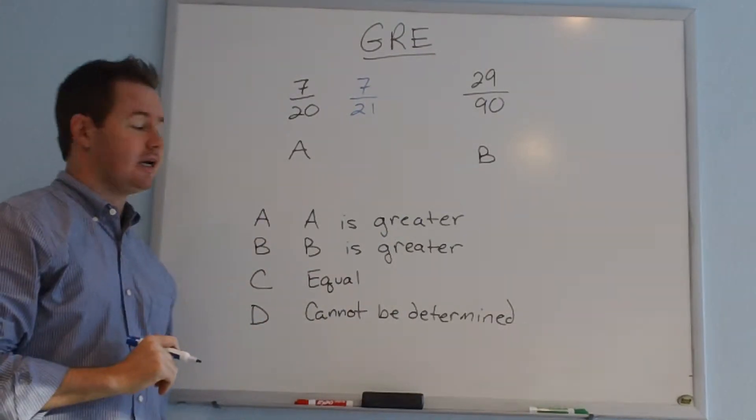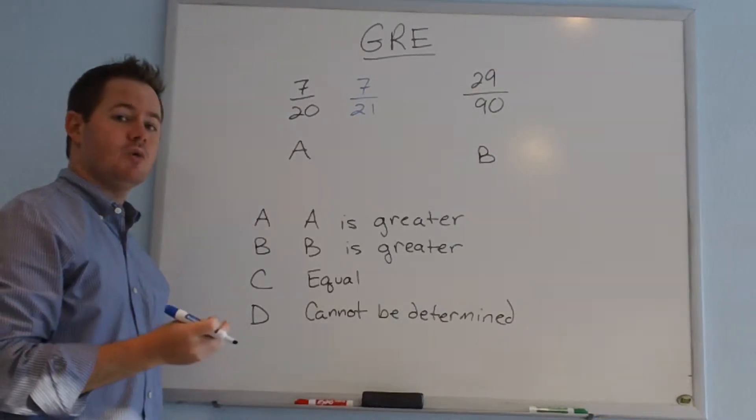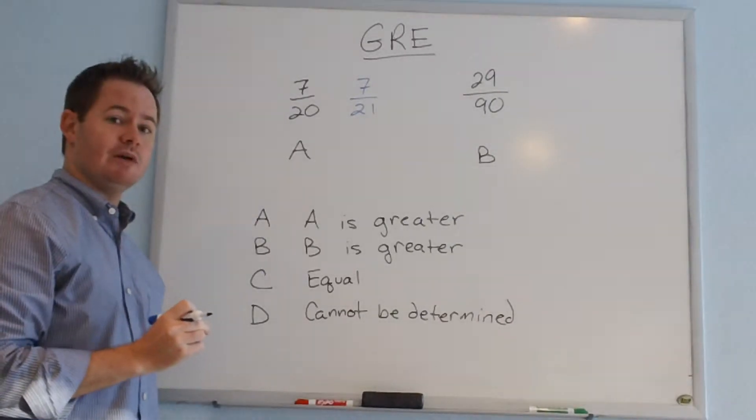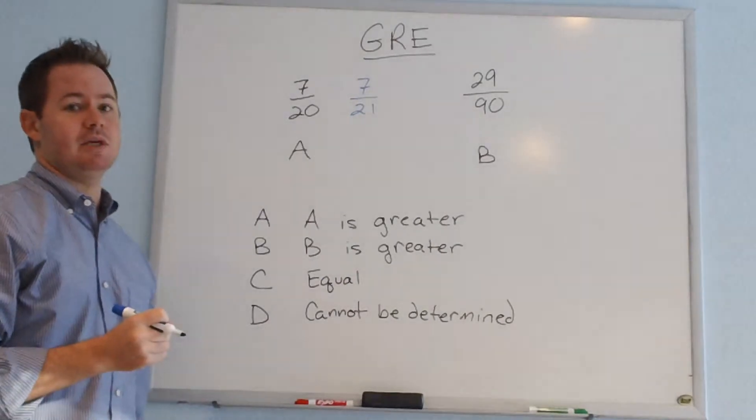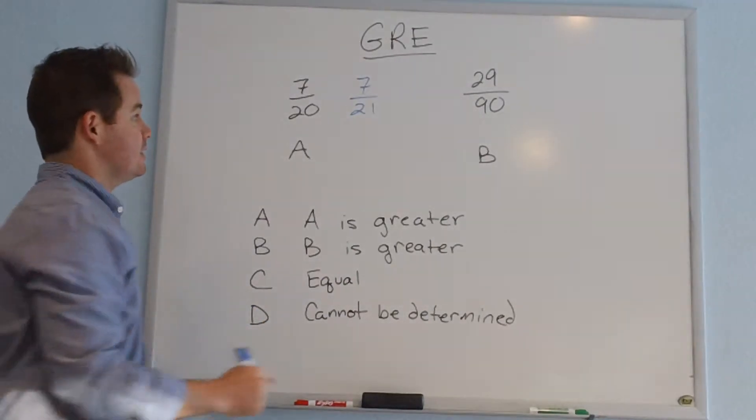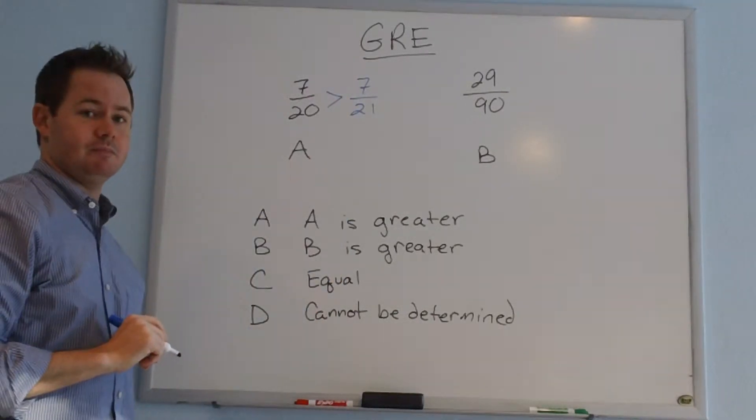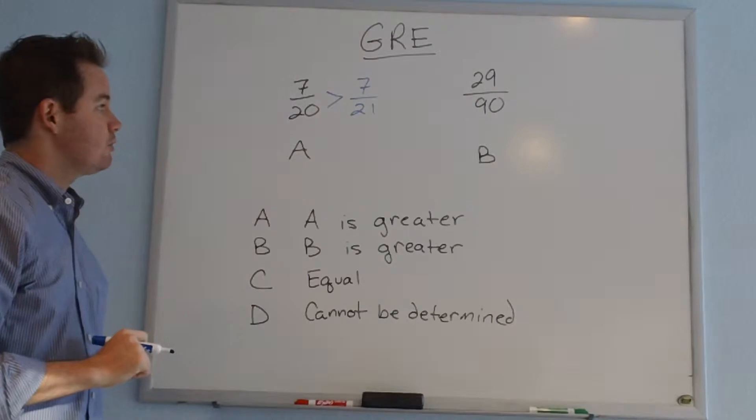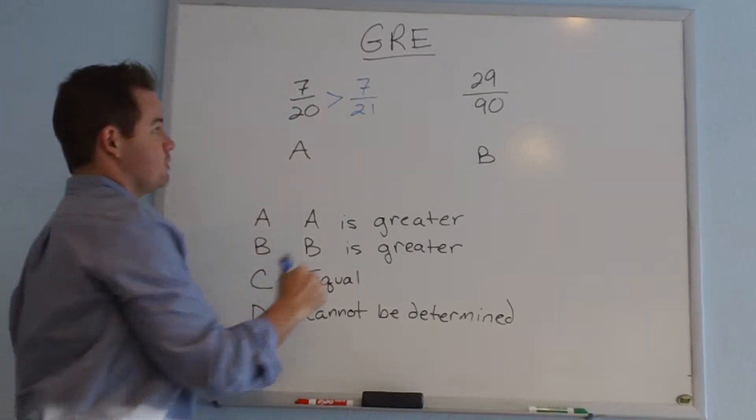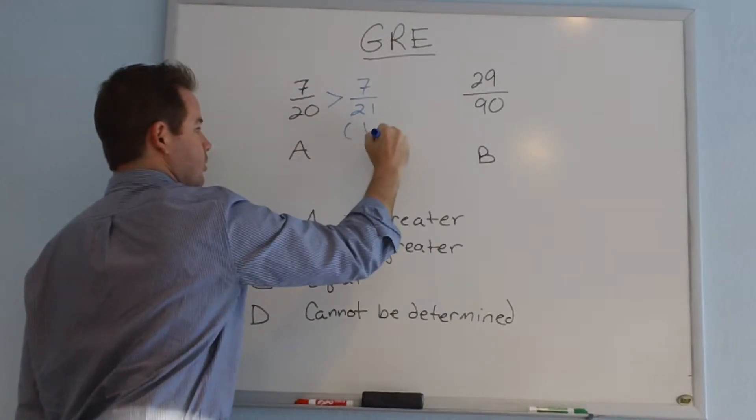7 over 20, as compared to 7 over 21, since 20 is smaller, whenever you have a smaller denominator, that means that your total value will actually be larger. So in this case, 7 over 20 is greater than 7 over 21. The reason that's important is because 7 over 21 is 1 third.